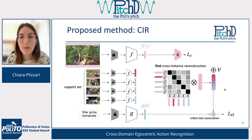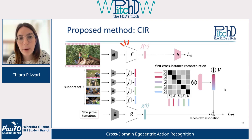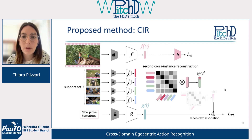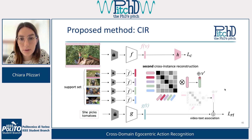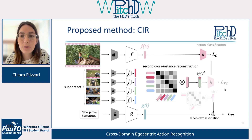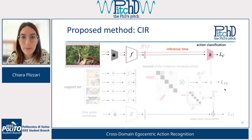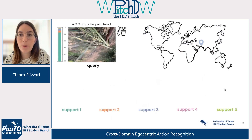The video-text association loss is a simple contrastive loss that aims to align the visual representation with the textual representation. The objective is to backpropagate this information to the feature extractor so that at test time we only need the feature extractor, which has learned a representation general enough to perform well across different scenarios and locations. We also introduce a second cross-instance reconstruction obtained through a standard cross-attention mechanism, trained with the same classifier used for training. At test time we don't need text — we just use visual information and our trained feature extractor to perform action classification.